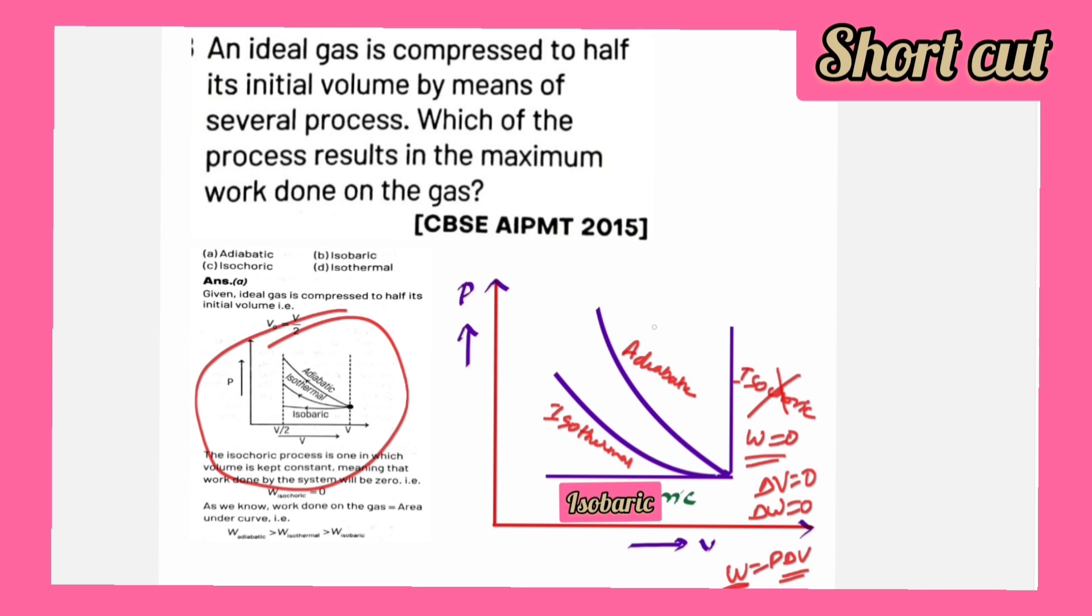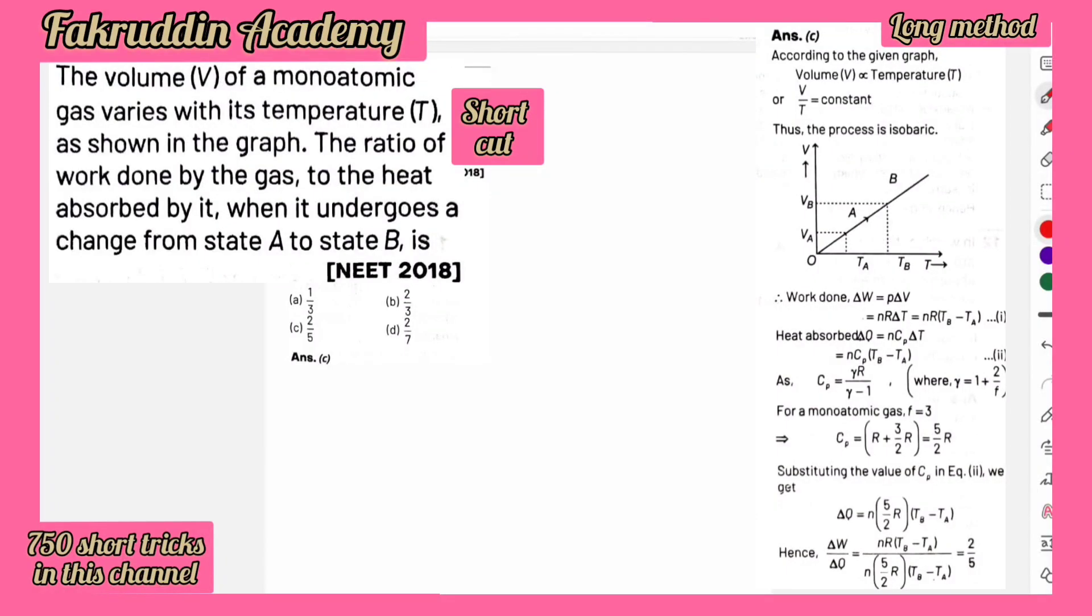For remaining things adiabatic, isothermal, and isobaric, you have to see the area below the graph. If you observe here, area below adiabatic process is more. Let us create a shortcut for this problem.